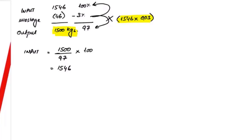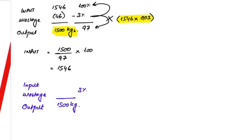Now let me show the opposite working. If input is unknown and wastage is 3% of input, and the required output is 1500 kilograms — what if I take 100% of this? If I'm taking 3% of 1500 for wastage, that gives 1500 × 3% = 45, so wastage would be 45.